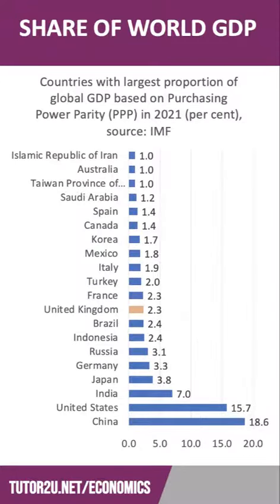These are the countries in the world with at least 1% of GDP, making an adjustment for purchasing power parity. Notice on this measure that China is bigger than the United States, but also that India climbs into fourth place ahead of Germany, and Indonesia and Brazil move above the UK.